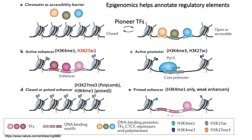In contrast, poised enhancers refer to open or nucleosome-free regions of the genome marked by K4 monomethylation but also by K27 trimethylation. K27 trimethylation is generally associated with polycomb repressive marks. Polycomb complexes are protein complexes responsible for epigenetic silencing of genes and also play roles in X chromosome inactivation. These are poised enhancers because they're nucleosome-free but also repressed — no active enhancing occurs at those loci. To activate them, you must remove the polycomb mark and add K27 acetylation.